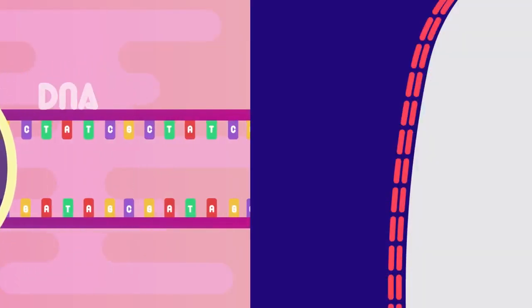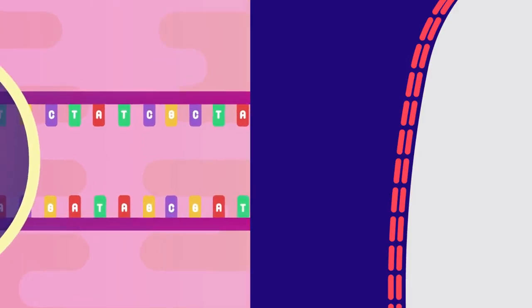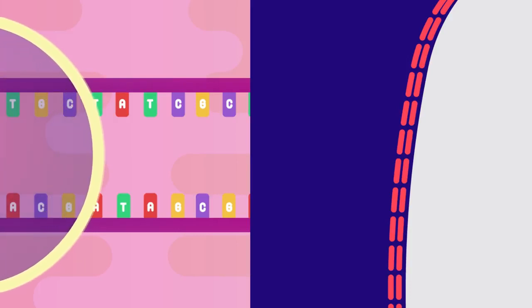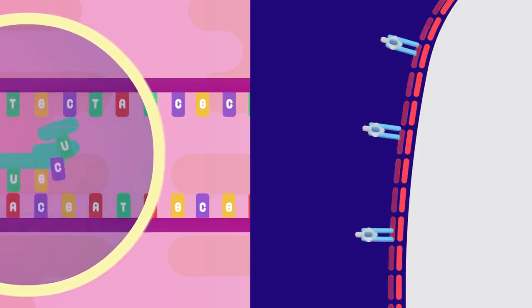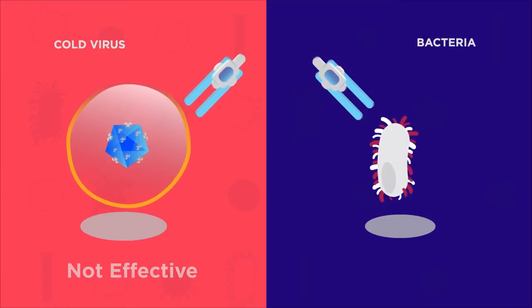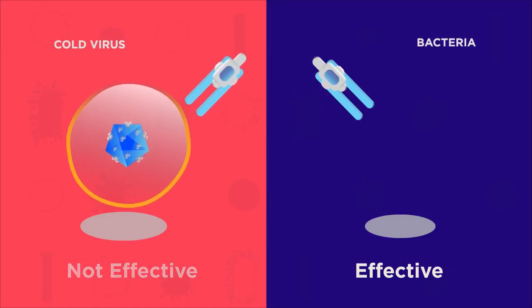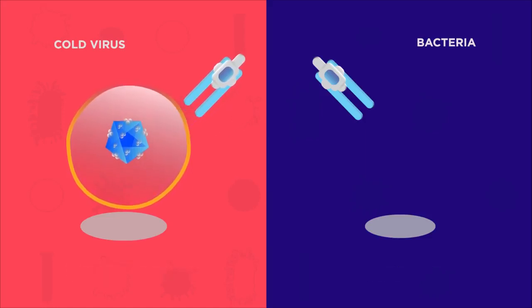Antibiotics do this by inhibiting certain metabolic or chemical processes which occur inside the bacteria. For example, they can stop protein synthesis, DNA replication, or break down their cell wall. This is why they are not useful against viruses, as viruses are not living organisms and so they don't have metabolic processes that the antibiotics can disrupt.